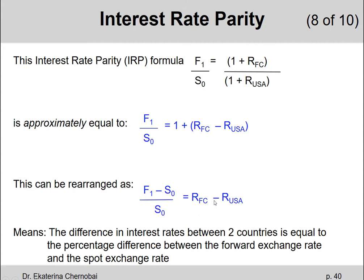It's the percentage difference between the forward exchange rate and the spot exchange rate. And on the right-hand side, what we have remaining from this rearrangement is the difference in the interest rates. The foreign interest rate for the risk-free asset minus the domestic interest rate for the risk-free asset. This is where this definition of the Interest Rate Parity is coming from. The difference in the interest rates between two countries is equal to the percentage difference between the forward exchange rate and the spot exchange rate.